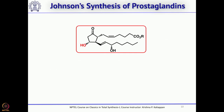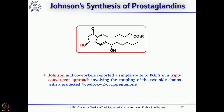We will now move to the third total synthesis of prostaglandins by Carl Johnson's group. Here the key reaction was 1,4-addition to a cyclopentenone followed by quenching the enolate with an electrophile, so that the two side chains are introduced in one step — a 1,4-addition followed by trapping of the enolate.